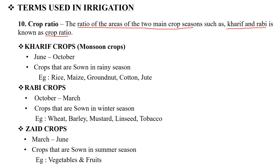Now we will learn about kharif crops. Kharif crops are the monsoon crops. The crop season is from June to October, which is the rainy season. For example, rice, maize, groundnut, cotton, and jute are the kharif crops.